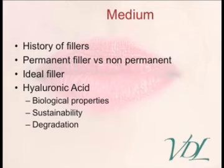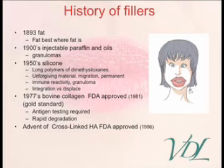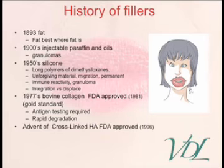We'll talk a little bit about the histories, permanent versus non-permanent, ideal fillers, and hyaluronic acids in particular. Cross-linked hyaluronic acid is what we are using today. History of fillers: in 1893, Neubauer did the first graft in the lip area. Fat augments best where fat is, but unfortunately when we lose volume we've lost that, so injected fat is resorbed very quickly in the lip and perioral area.